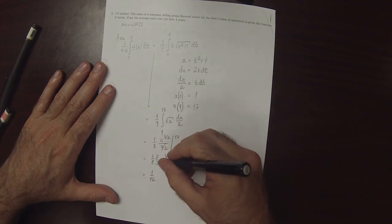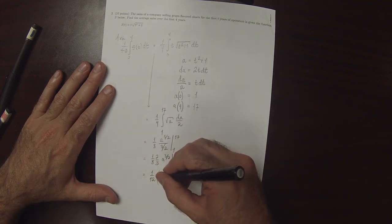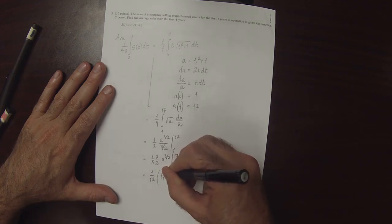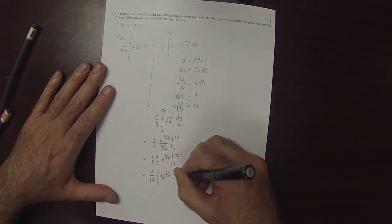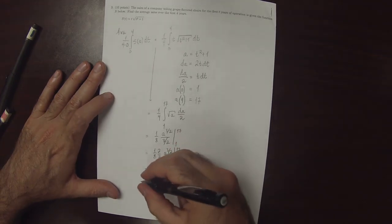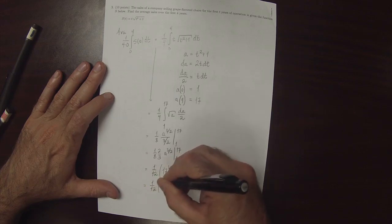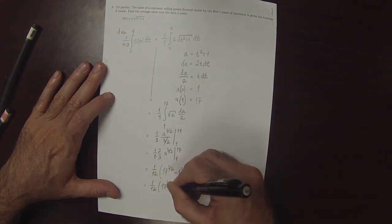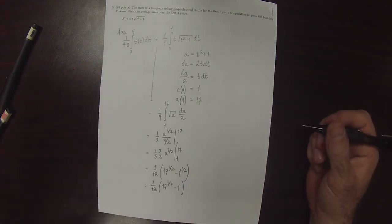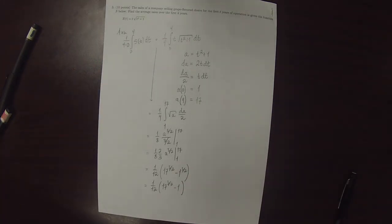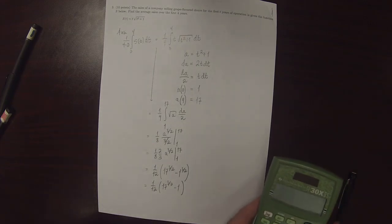And then evaluate this. That would be 17 to 3 halves minus 1 to 3 halves, which is 1 twelfth times 17 to 3 halves minus 1. Because 17 to 3 halves doesn't work out nicely as an integer.